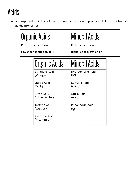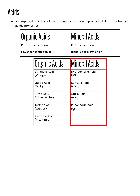On the other hand, mineral acids are strong acids that fully dissociate to produce a higher concentration of hydrogen ions. Here are some examples of mineral acids: they are hydrochloric, sulfuric, nitric, and phosphoric acid. For the chemical formulas of these acids, please pause the audio and refer to the notes.